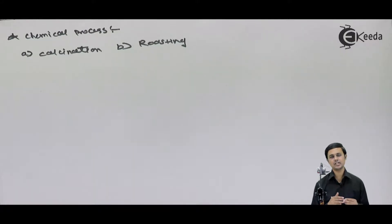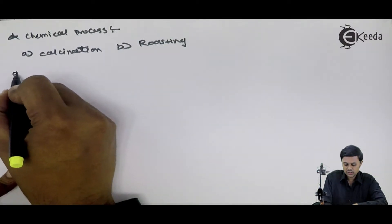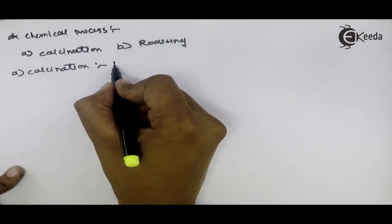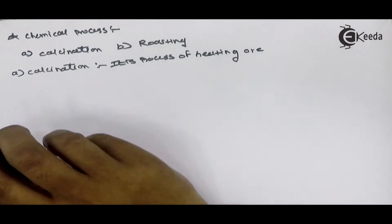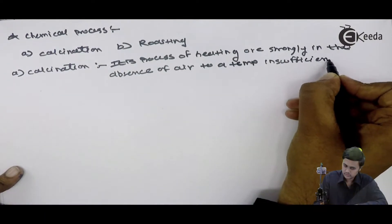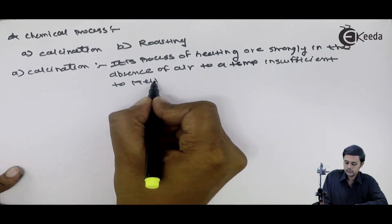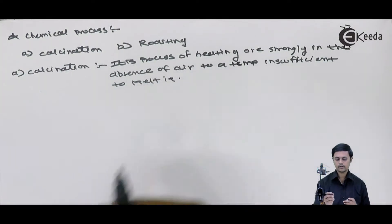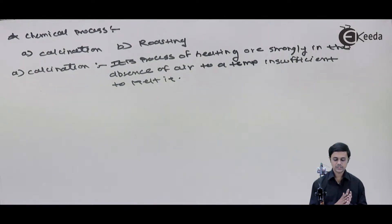Let's understand what is exactly the concentration and what is exactly the roasting. We will go with the definition of calcination. It is a process of heating ore strongly in absence of air. When we do the heating to the ore in a completely absence of air, that time we are talking about calcination.